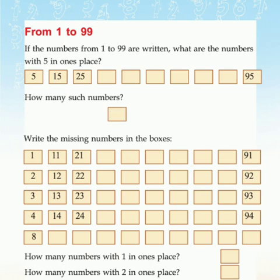Now like that, fill all the numbers in the column below. You can see in the first row the numbers are 1, 11, 21, and at last 91. So here in the 1's place the numbers are 1. The sequence is 1, 11, 21, 31, 41, 51, 61, 71, 81, and 91. So in every number, 1 is in the 1's place.